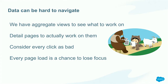Data can be very hard to navigate. We have aggregate views of data that tell us what we should work on, and then detailed pages so we can actually work on them. A common flow I see with our users is they open up a list view in one tab, open each detailed page in another tab, and go back and forth — what should I work on next from the list view? Go to the detail page, do the work, close that tab, back into the list view.